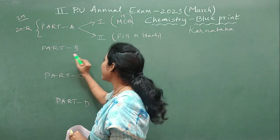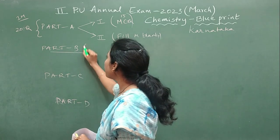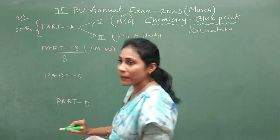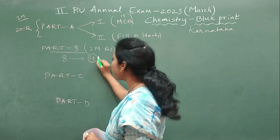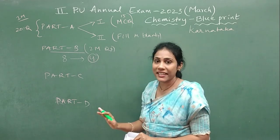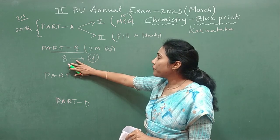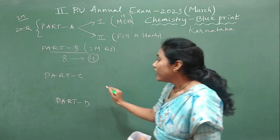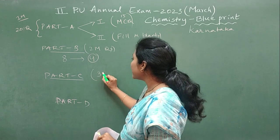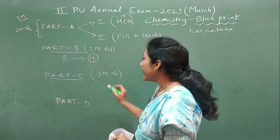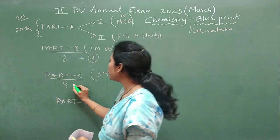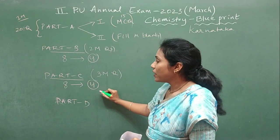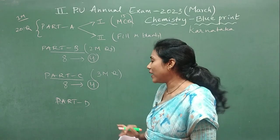Coming to Part B — it is of 2-mark questions. You will have 8 two-mark questions, and out of 8 you have to attempt only 4. Similarly, Part C is of 3-mark questions. Here also, 8 questions are given and out of 8 you have to attempt 4. Each question carries 3 marks. So here also a good amount of choice is available.